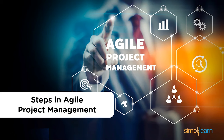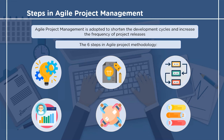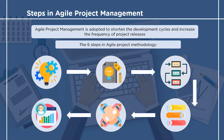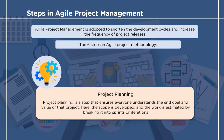We shall now see the steps in agile project management. The goal of agile methodology is to produce shorter development life cycles and more frequent product releases than traditional waterfall project management. We will now check six steps in agile project methodology. The first step is project planning, which includes feasibility study, development of scope, breaking the project into executable tasks or sprints.